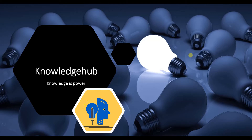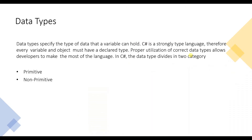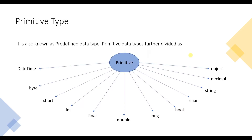Without any further delay, let's start the video. So what are data types? Data types specify the types of data that a variable can hold. C# is a strongly typed language, so every variable and object must have a declared type. Proper utilization of correct data types allows a developer to make the most of the language. In C# the data types are divided into two categories: primitive and non-primitive. Primitive types are predefined data types and are further categorized as shown in the diagram.